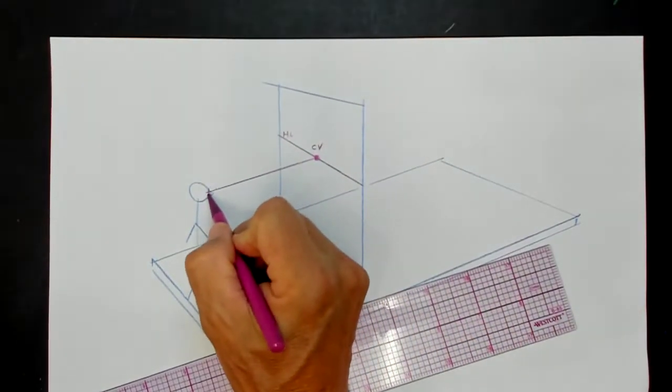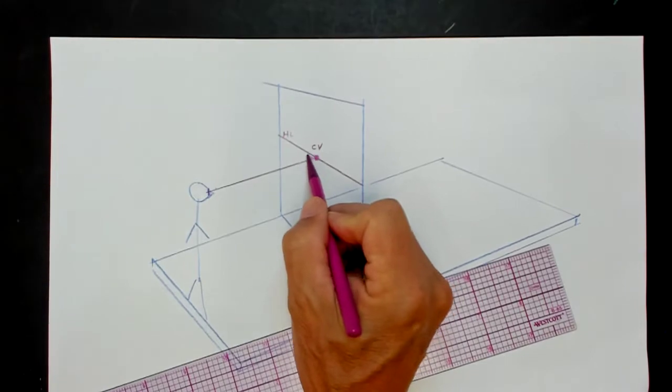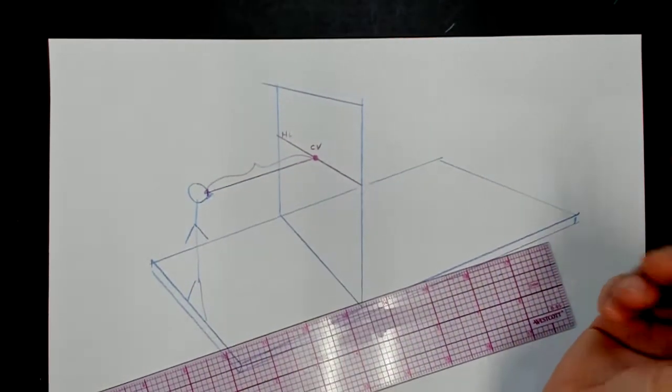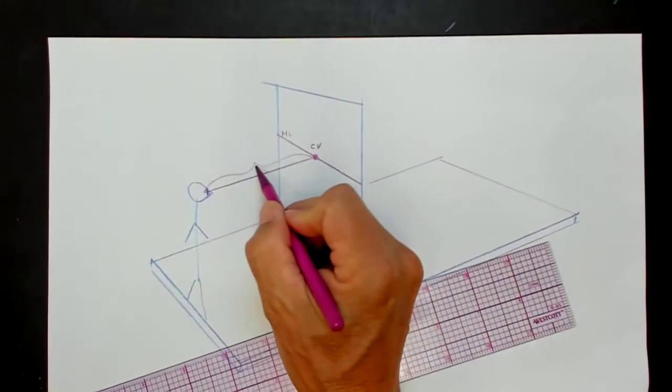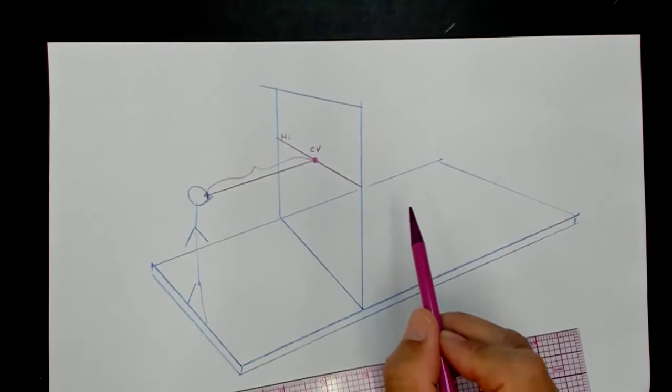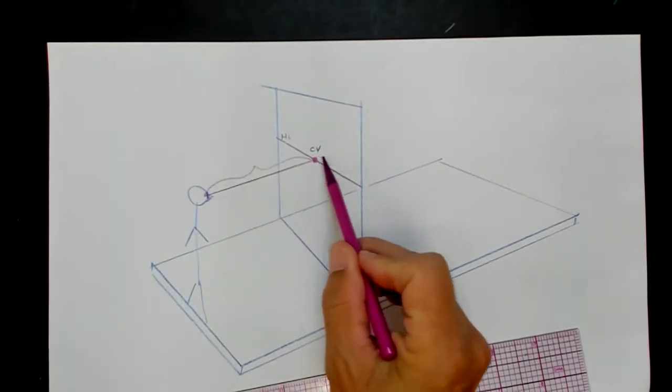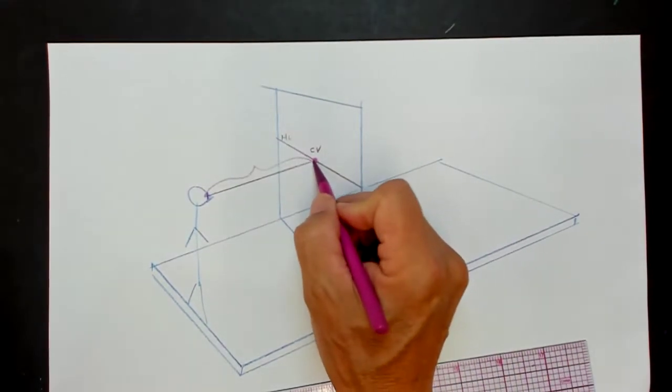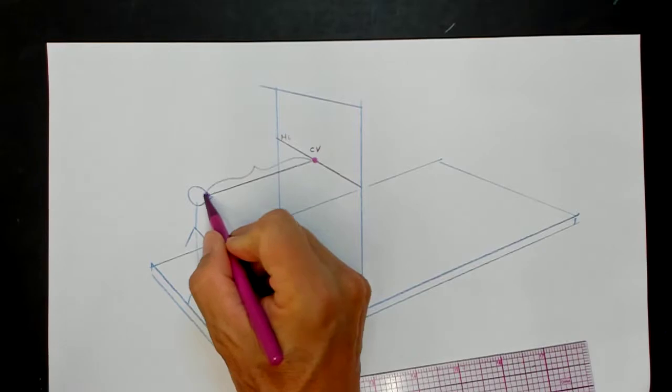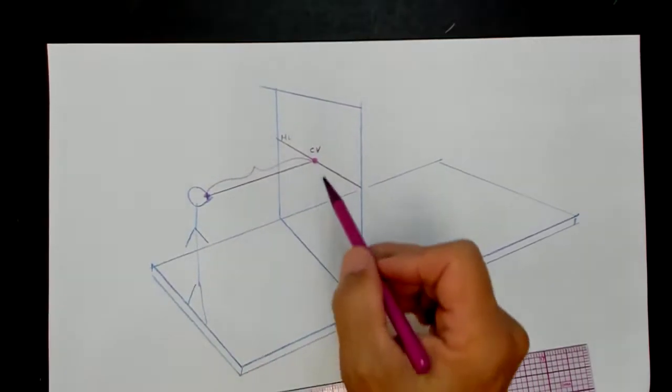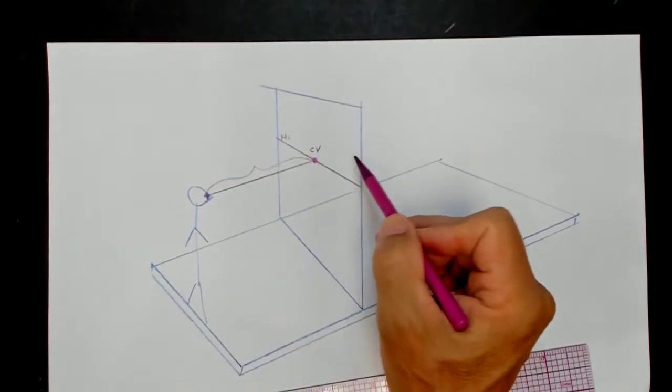This is the distance between the viewer and this picture plane, and we've found out from previous videos that this distance is important because it changes what the object you're drawing can look like. If you're setting up a perspective diagram, you really need to know where the viewer is, how far the viewer is from this picture plane.